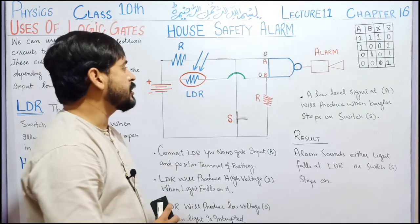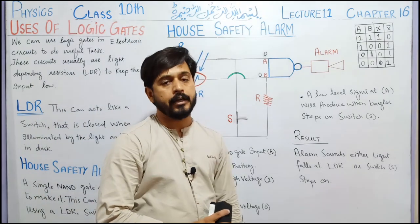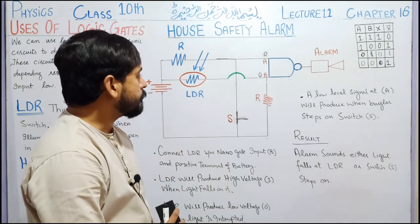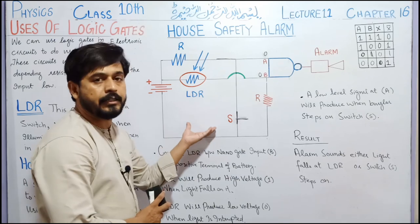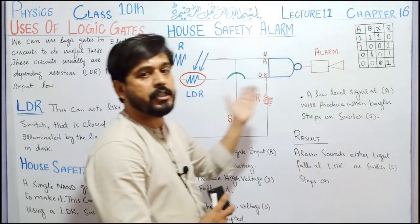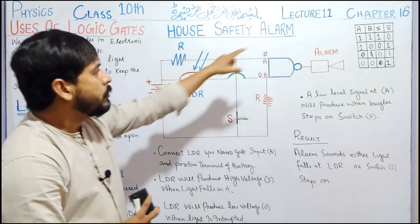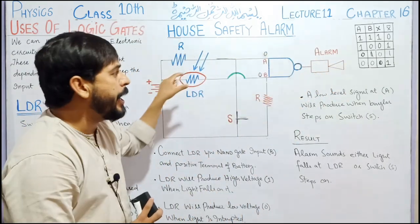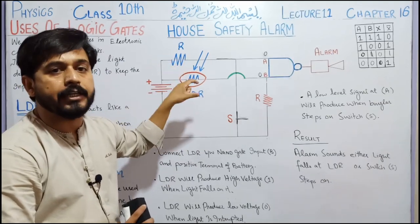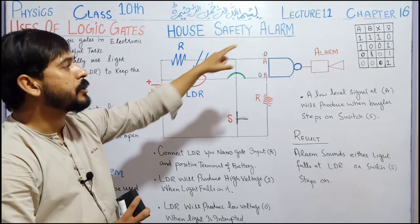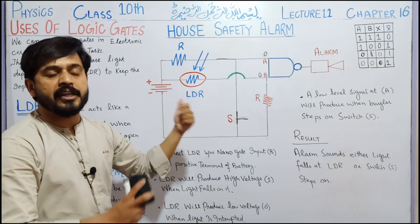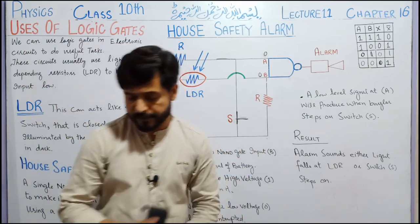This was our today's topic. The main thing in this topic was this circuit which we needed to understand. I have explained all situations according to the truth table. Watch this video point by point according to the truth table, even though I have repeated each point two or three times. Inshallah you will understand. If your concept of the NAND gate is clear, then understanding this circuit will not be a problem.